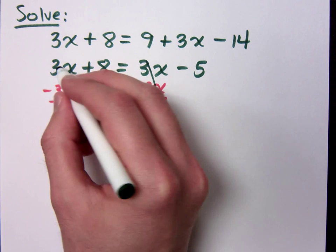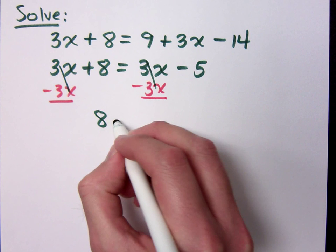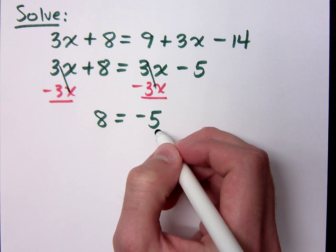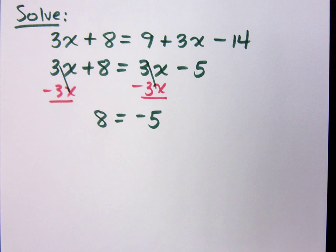So what do I have? 8 equals what? Oh, I guess they cancel on both sides, so I have 8 equals what? Negative 5? What do you mean, no? It's not 8 equals negative 5?